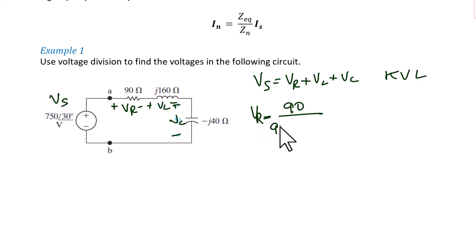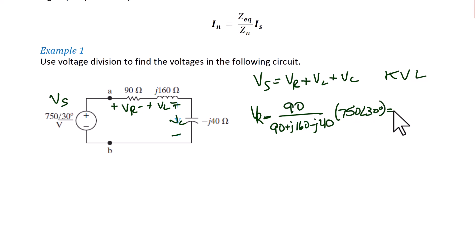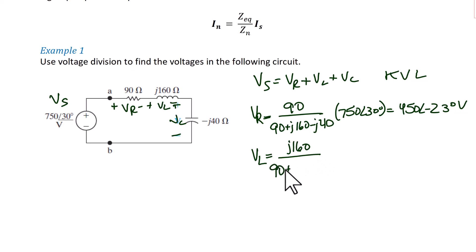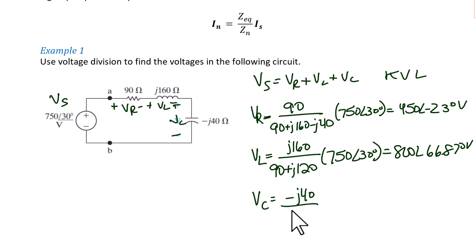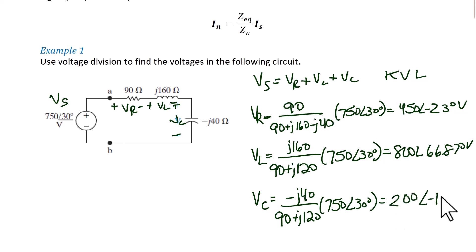Vr equals 90 over (90 plus J160 minus J40) times 750 at an angle of 30 degrees, which equals 450 at an angle of negative 23 degrees. Vl equals J160 over (90 plus J120) times 750 at an angle of 30 degrees, which equals 800 at an angle of 66.87 degrees. The voltage across the capacitor is negative J40 over (90 plus J20) times 750 at an angle of 30 degrees, which equals 200 at an angle of negative 113 degrees.